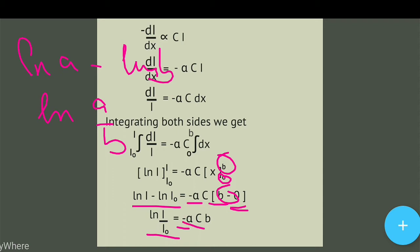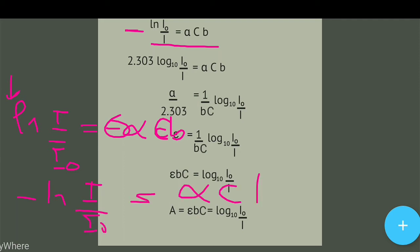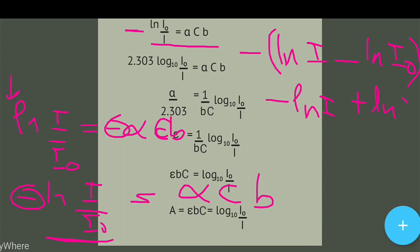फिर आता है minus alpha × c × (b - 0) = minus alpha × c × b। अगर हम minus sign को इस side लेके जाएंगे तो: ln(I/I₀) = -αcb। Sign को change करने पर ln(I₀/I) = αcb। यह long of a minus long of b का formula use करके: ln(I₀/I) = αcb — यही है हमारा result।